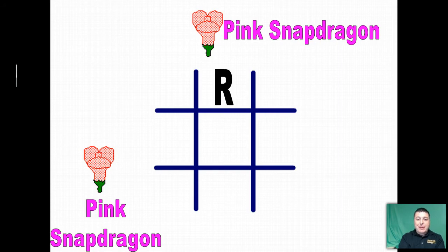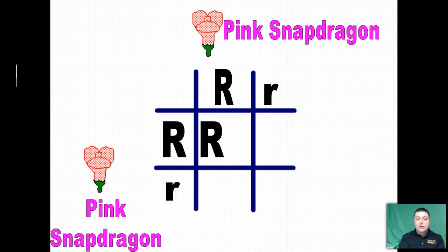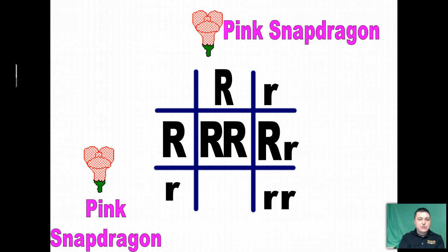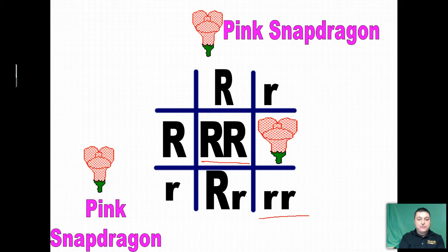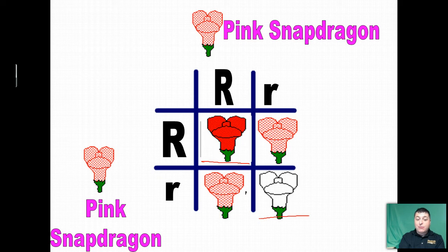When you cross your pink snapdragon with another pink snapdragon, you'll get a homozygous dominant individual, two heterozygous individuals, and one homozygous recessive. When you only have red alleles, you're going to appear red. If you have red and white alleles, then you're going to be pink. And if you have only white alleles, then you're going to be white. So the white trait comes back and the red trait came back — the alleles didn't blend at all.